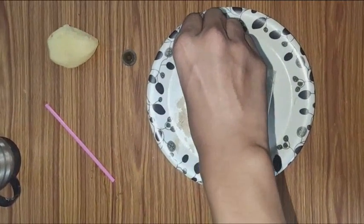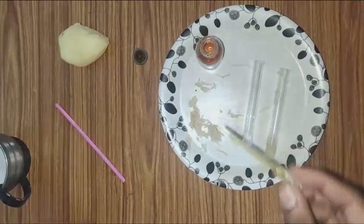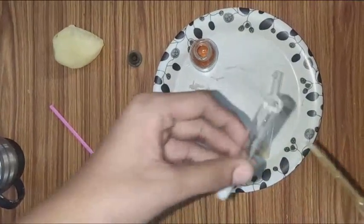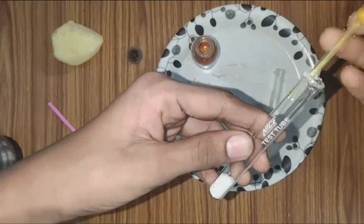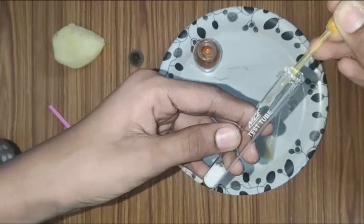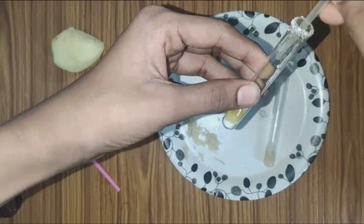Now, take test tube two which contains salt and pour a few drops of iodine in it. As you can see, I am dropping it inside the test tube.